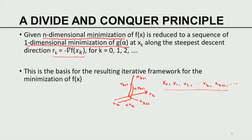There are two ideas at work: a greedy principle — if I move, I want to get closer to the minimum — and a divide-and-conquer principle — I solve the n-dimensional problem as a sequence of one-dimensional problems. Dividing a larger problem into simpler problems and solving them in sequence is divide and conquer. It is an amalgam of these two principles that forms the basis for the iterative minimization framework.